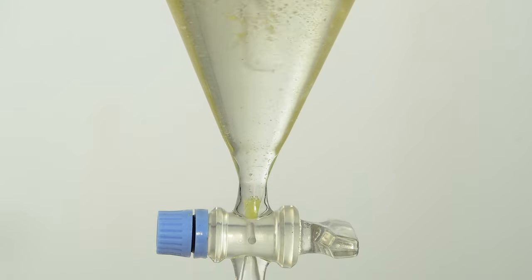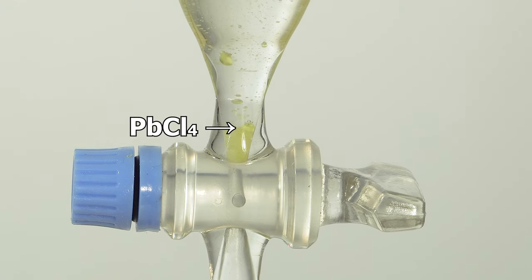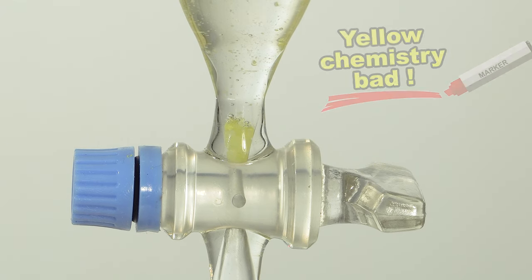Actually, lead tetrachloride is quite an unstable reagent, which is not surprising at all since it's yellow, and there are very few reactions involving it, but I'll show a couple anyway.